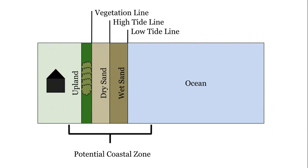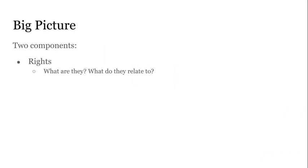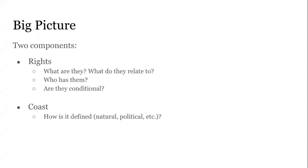Every state has these unique definitions. Why do these definitions matter? They matter because when we're talking about public and private rights within the coastal zone, we certainly need to know what that coastal zone is. So these rights we're going to talk about — how are they defined and where do they exist within that coastal zone? In terms of the big picture, there are really two components: we can look at these rights and ask questions like what are they and what do they relate to, who has them, and are they conditional? And then the coast — what is the coast, how is it defined, is it natural, political, et cetera?